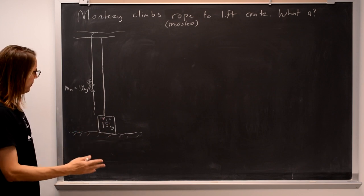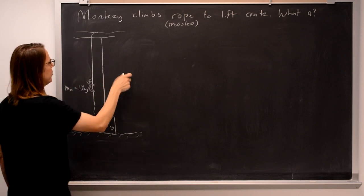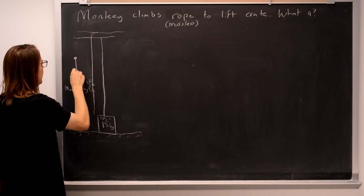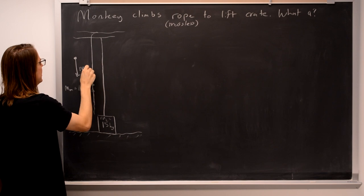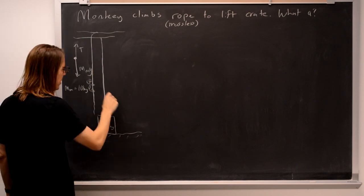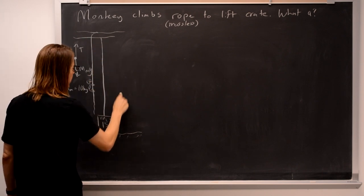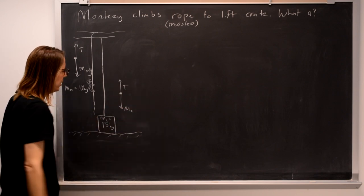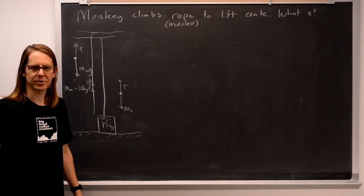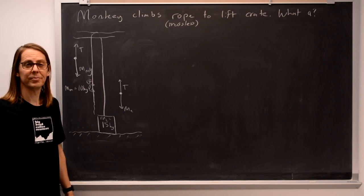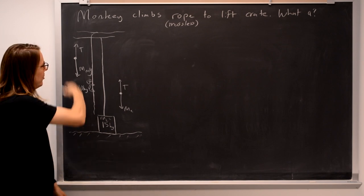So let's draw one for the monkey, and that is the mass of the monkey times G down, and tension up. The tension is constant, so when we draw the free body diagram for the crate, it's mass of the crate down, and tension up. So the free body diagrams are actually pretty simple in this case. You just have to think about what to do with them, because this is not a static problem. The monkey is accelerating up.